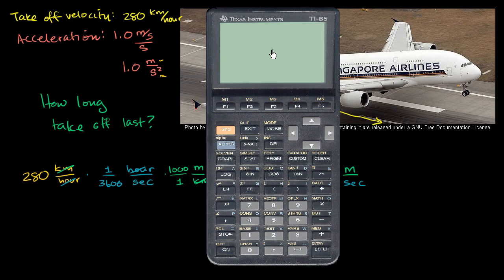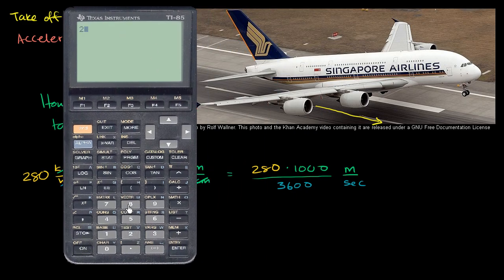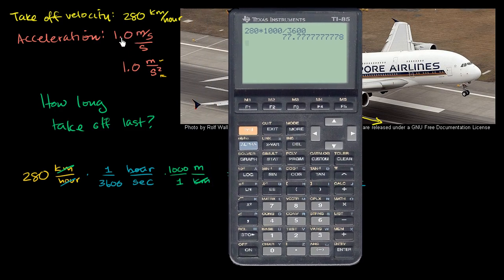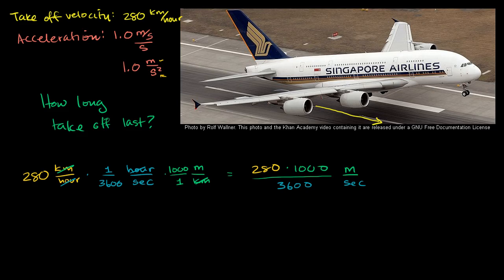Let me calculate that on my TI-85. We have 280 times 1,000, which is 280,000, divided by 3,600, giving 77.7 repeating. Since we have two significant digits in our original values, we round this to 78 meters per second.